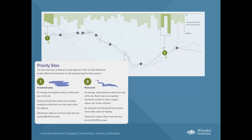We used this analysis with the Roadwatch data to come up with a suite of nine sites recommended for mitigation that would be cost effective. Recognizing that mitigation is costly to implement, we prioritized these nine and came up with two top recommended sites. One was at the Crowsnest Lakes — really important for the movement of bighorn sheep. The other was Rock Creek — a multi-species area important for movement of bear, cougars, wolves, elk, moose, and deer.